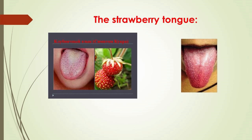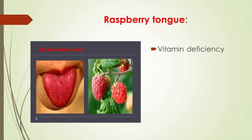Strawberry tongue is a symptom of a condition, and some of these conditions can be serious. A red, swollen, and bumpy tongue can also be a sign of scarlet fever — a raspberry tongue. It can also mean vitamin deficiency; low levels of vitamin B12 and folate can cause a strawberry or raspberry tongue.